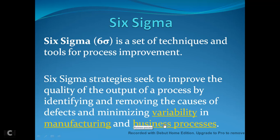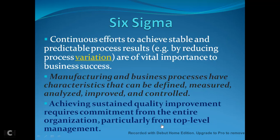Six Sigma is a continuous effort to achieve a stable and predictable process result. It keeps on trying to reduce process variations — it tries to reduce and remove the variances in manufacturing and business processes.